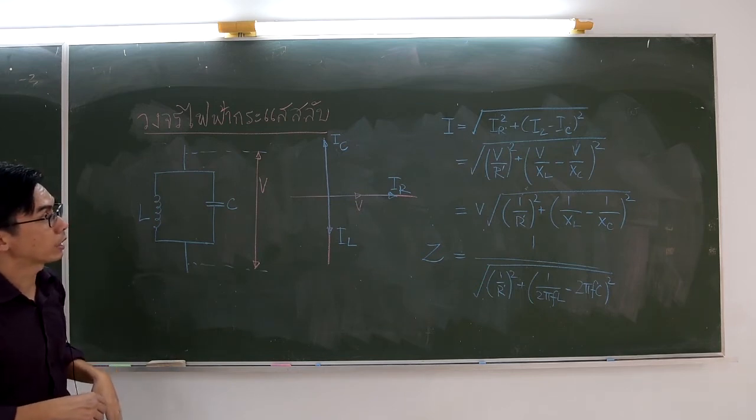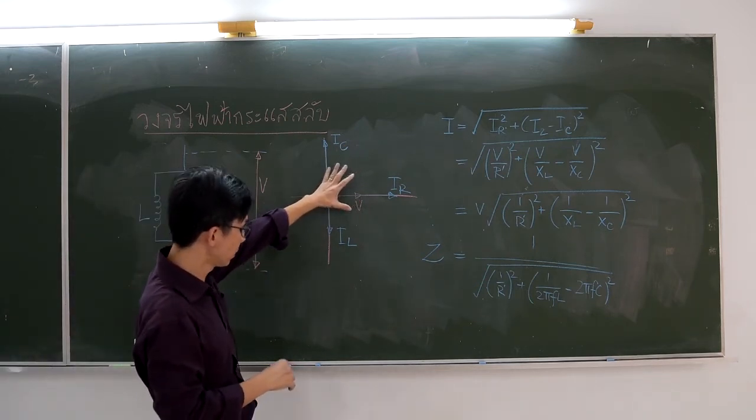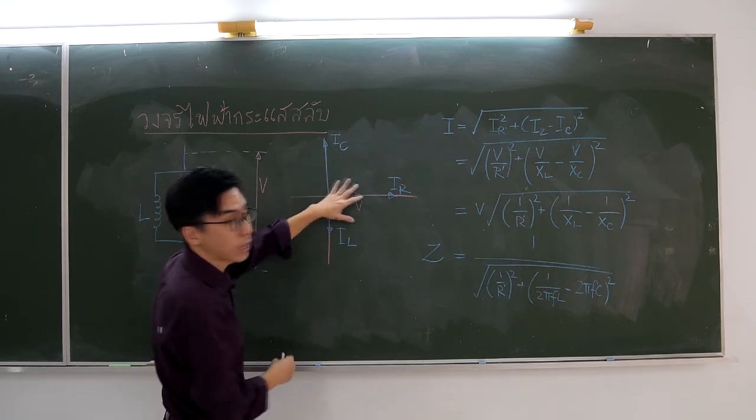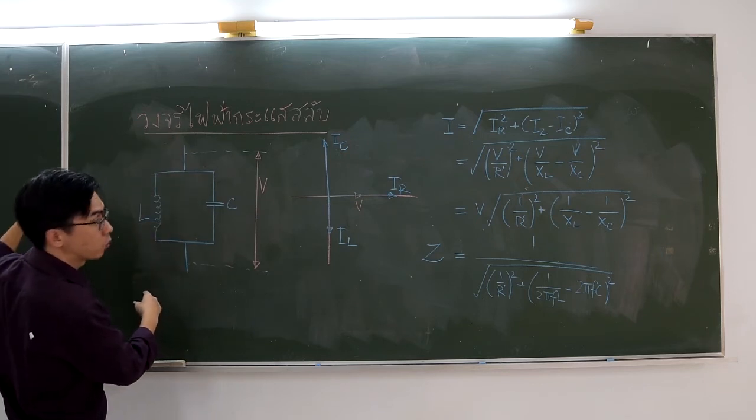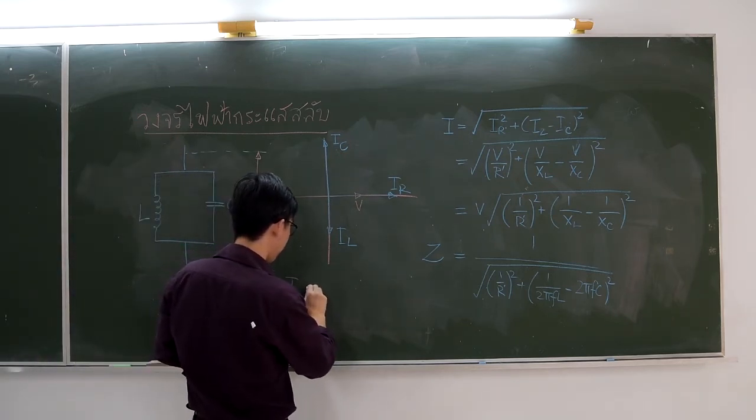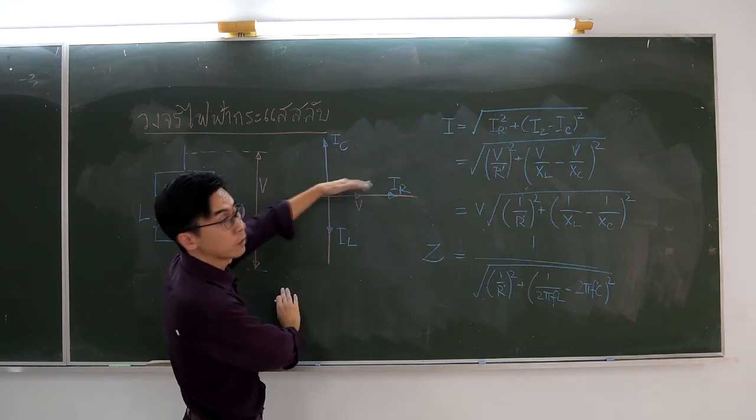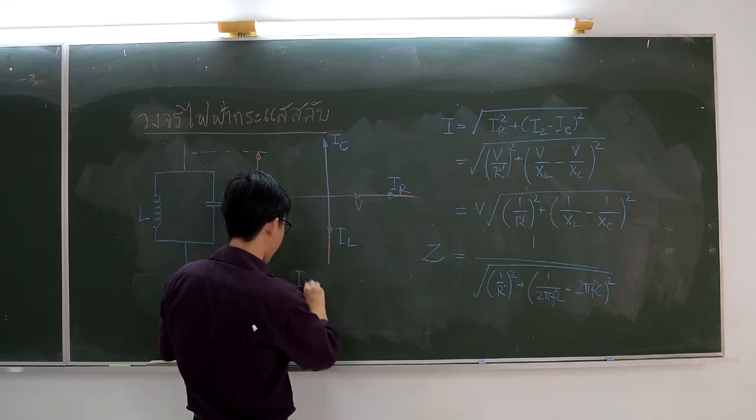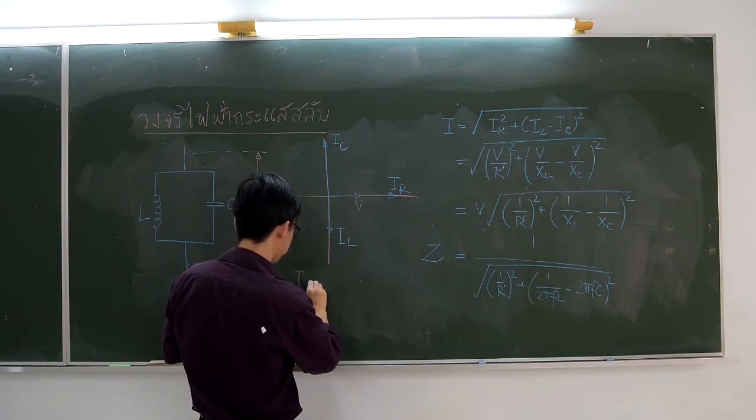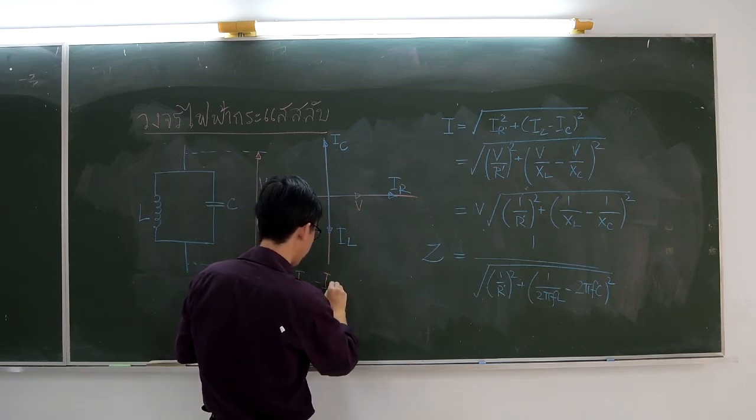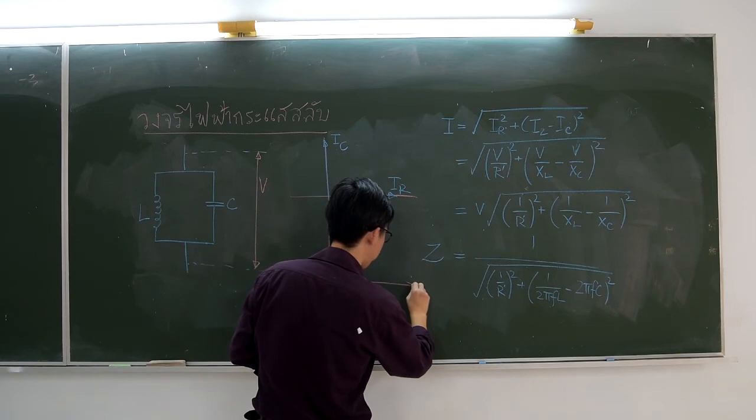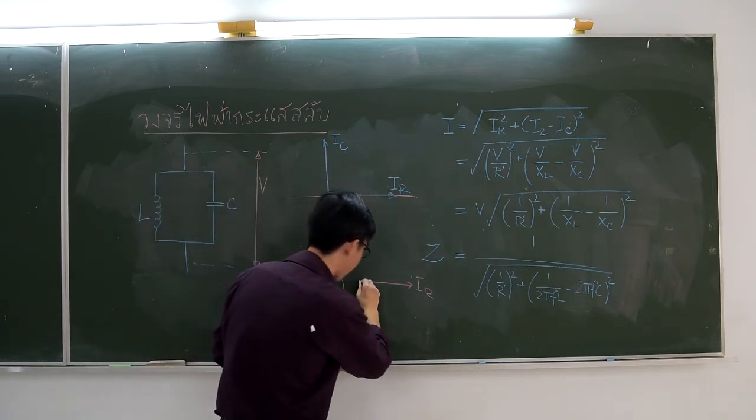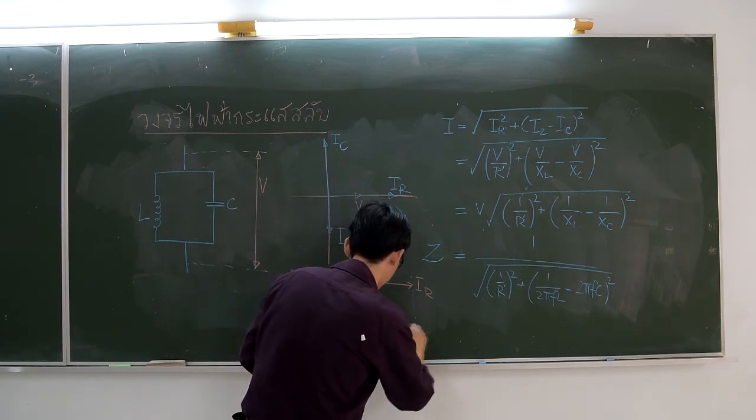In the phasor diagram, it will look like this. So the current flow in the main circuit can be found using the phasor diagram. Suppose IL is larger than IC. The difference between IL minus IC is a vector pointing downward, and IR points to the right.